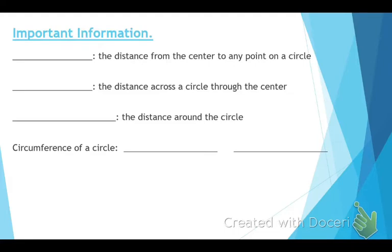I want us to go over some vocab words that are very important. The first thing I want you to think of — draw a little circle off to the side. This is the distance from the center — put a little dot there for the center — to any point on the circle. What is that little distance called? That is the radius. Use your red pen and fill that in the blank.